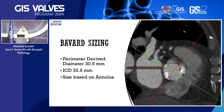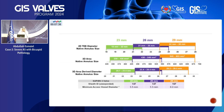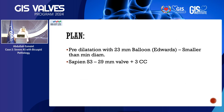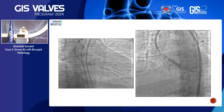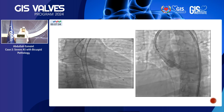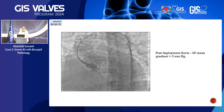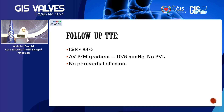The perimeter-derived diameter was smaller than the ICD, so we sized based on the annulus using the Bavard method. Coronary height was not an issue with generous sinuses. At 30.5 mm, it was out of range for the 29 Sapien valve, so we added a few cc's of volume. The plan was to pre-dilate with a 23 mm balloon — smaller than the minor diameter — then implant a Sapien 3 29 valve plus 3 cc. Post-procedure showed minimal leak and a gradient of 3. Follow-up echo showed EF 65%, mean gradient 5, no PVL, no pericardial effusion.